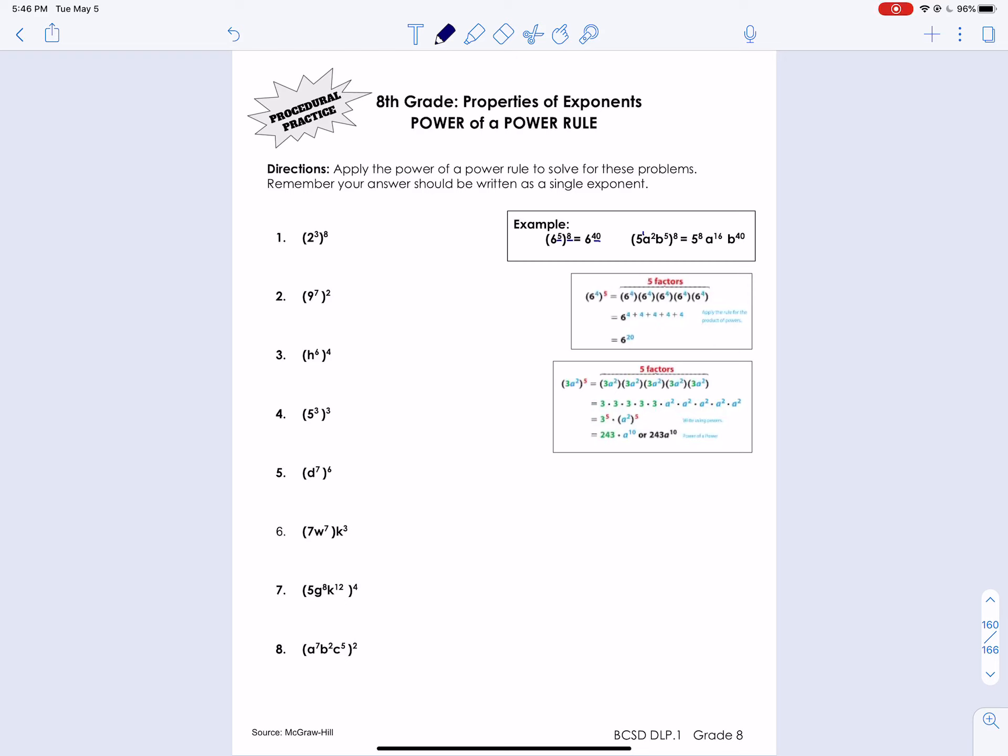Again, this is all review. There's no need to go through every single problem. Alright, so let's just choose a couple. Maybe number 2. So the base is 9. That stays the same. And then those exponents, we're going to multiply. So 7 times 2, which is 14. So that's our new exponent. And that's it.